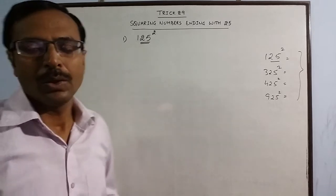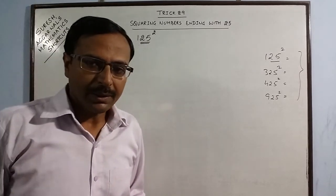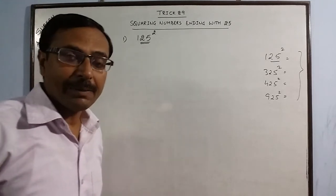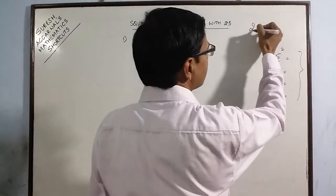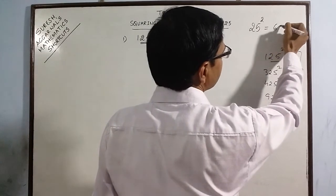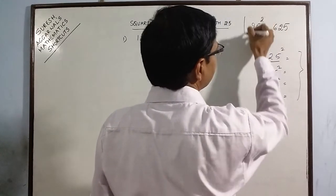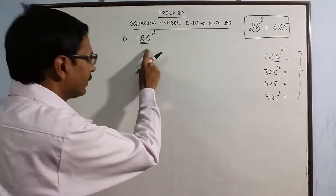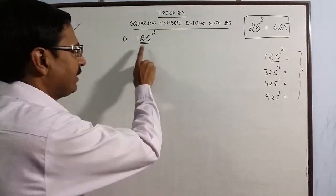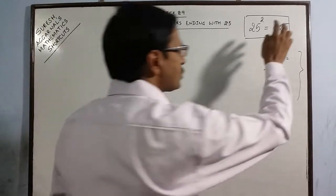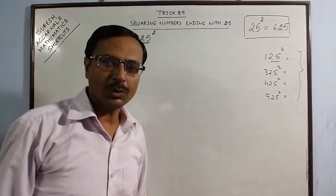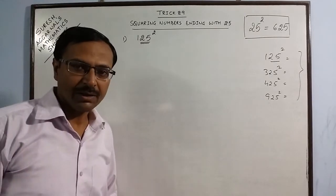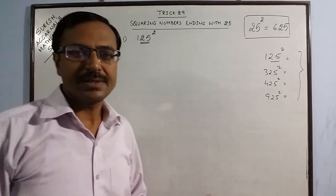Now the trick here is to forget this 25 and remember what is 25 square. We all know that the square of 25 is 625. So every square of a number which ends with 25 will end with 625. So we are sure for one thing that every answer which we are calculating in this trick will end with 625.